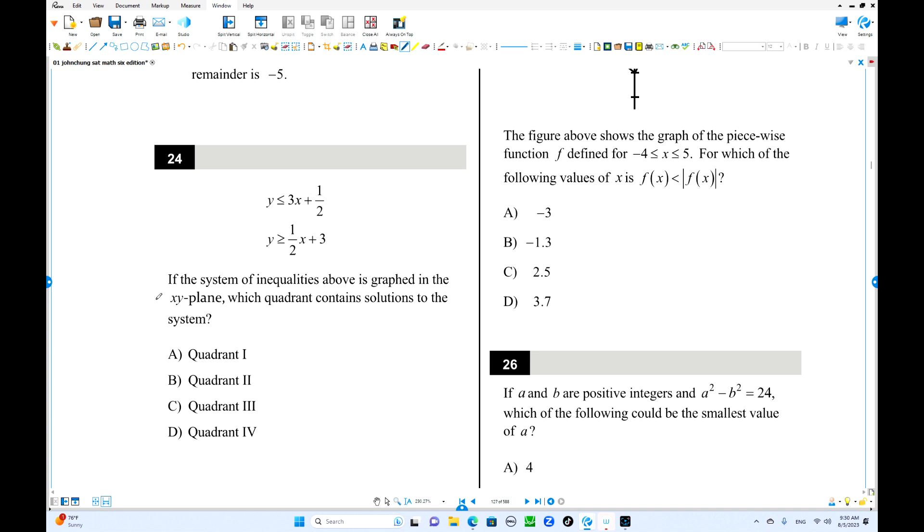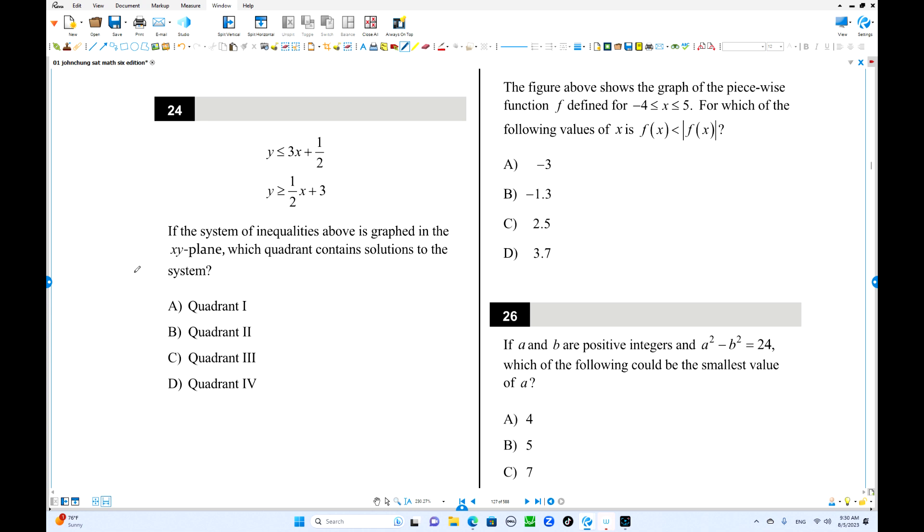Number 24, you have a system of inequalities. So where is the solution set? Let's find the graph quickly. This graph is 3x plus 1 half. Here is 1 half, 3 is over here, slope is this one. But this is less than, so below the graph. The next one is 1 over 2x plus 3. 3 is over here. Slope is smaller, less than 3. But this is greater than, above the graph.